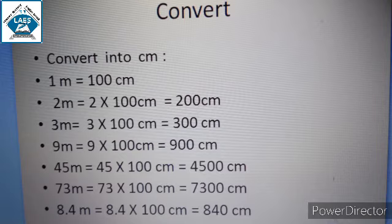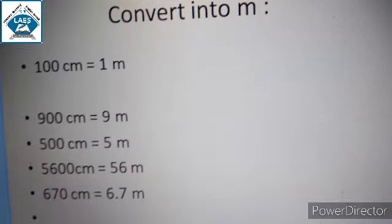Then next is convert into meter. Students, you learned convert into centimeter. Now we will learn convert into meter. Previously in convert into centimeter, we remembered 1 meter equals to 100 centimeter. So for meter it will be opposite: 100 centimeter to 1 meter. So 900 centimeter equals to 9 meter. 500 centimeter equals to 5 meter. Same way, 5600 centimeter is 56 meter.